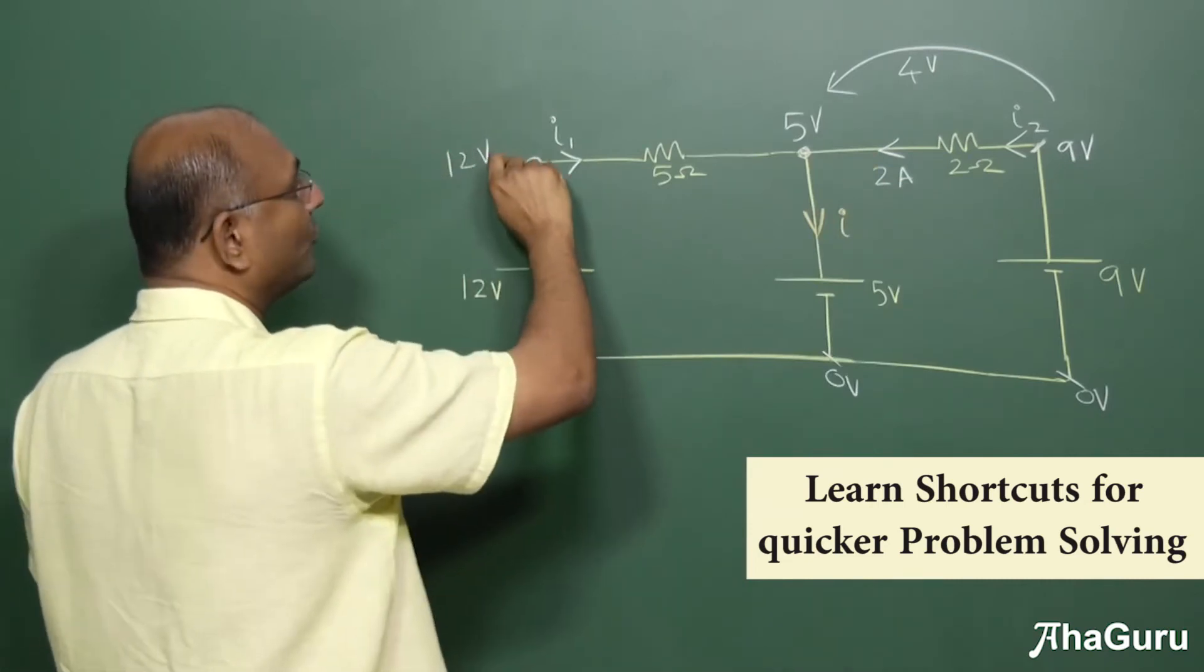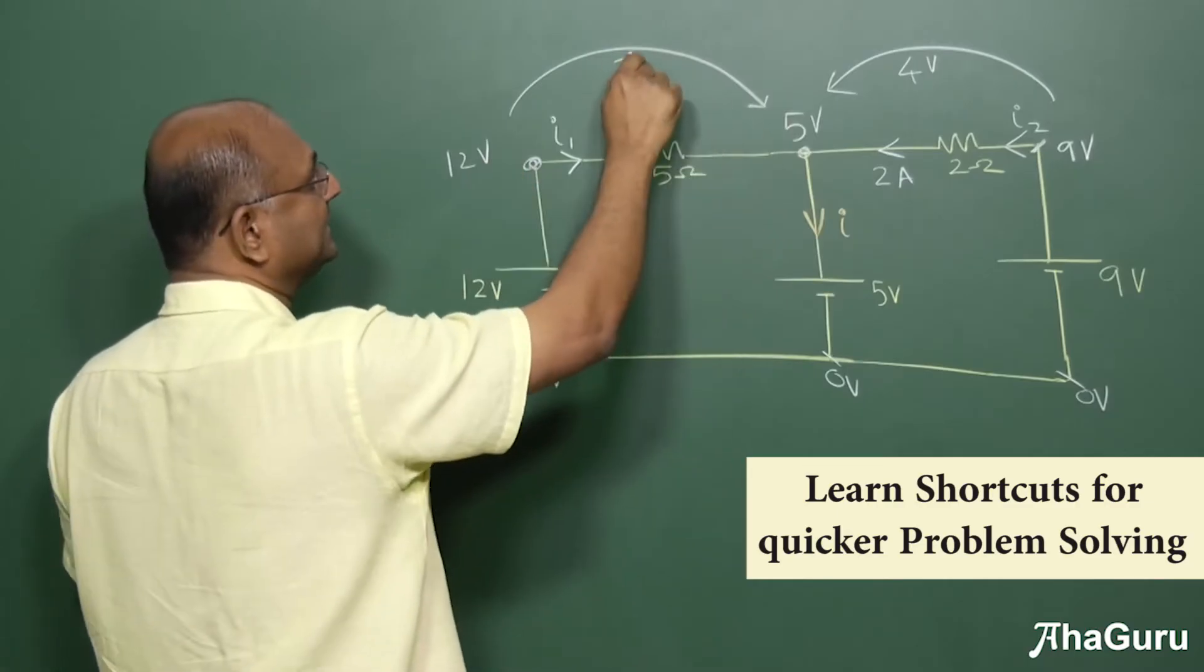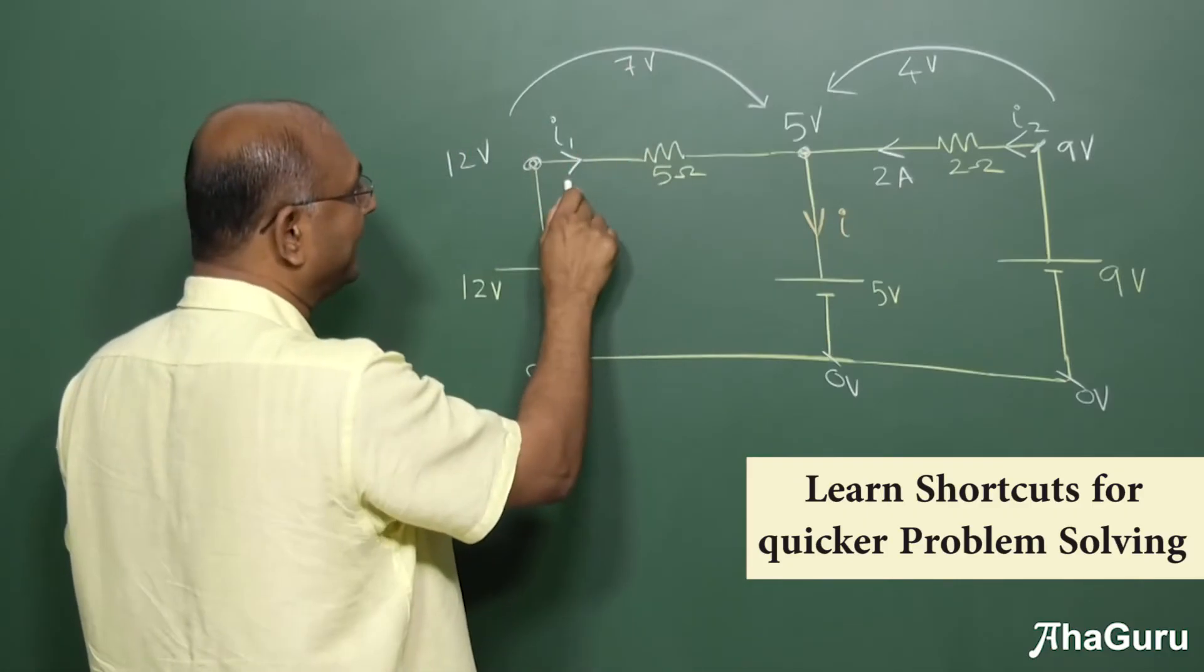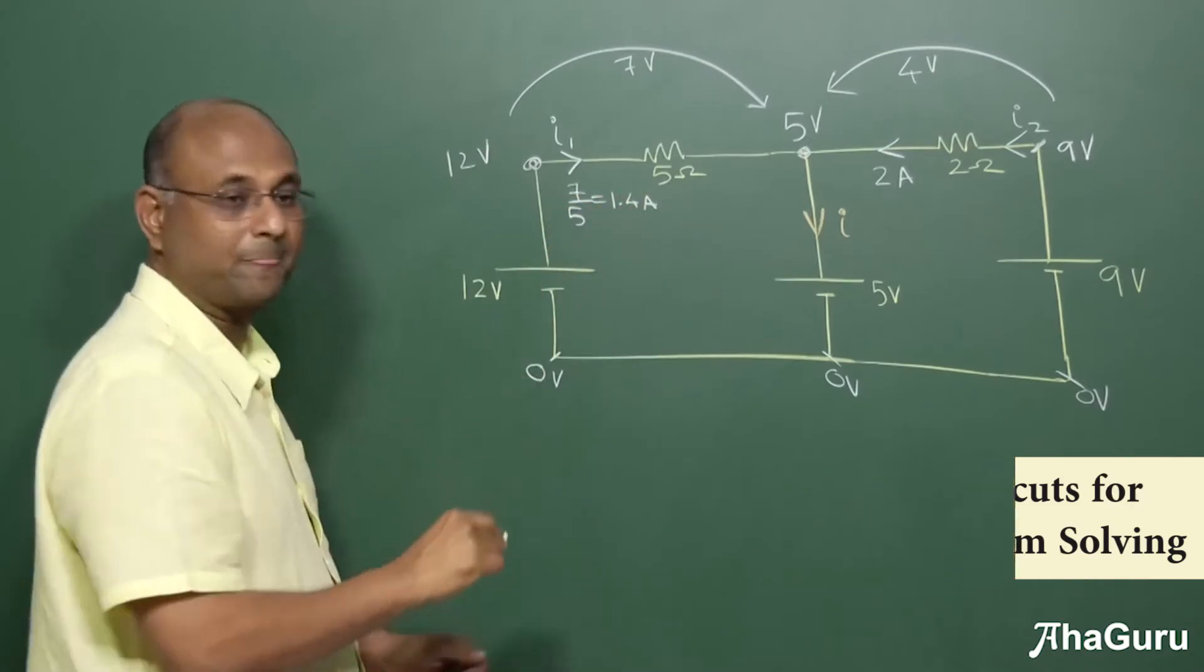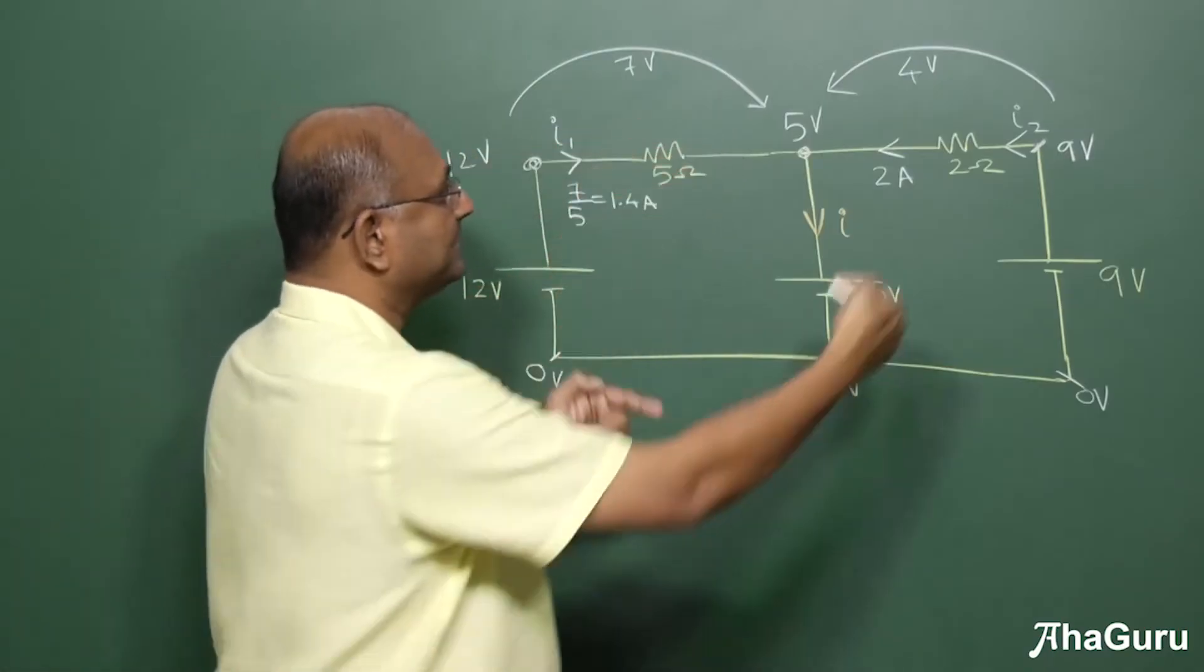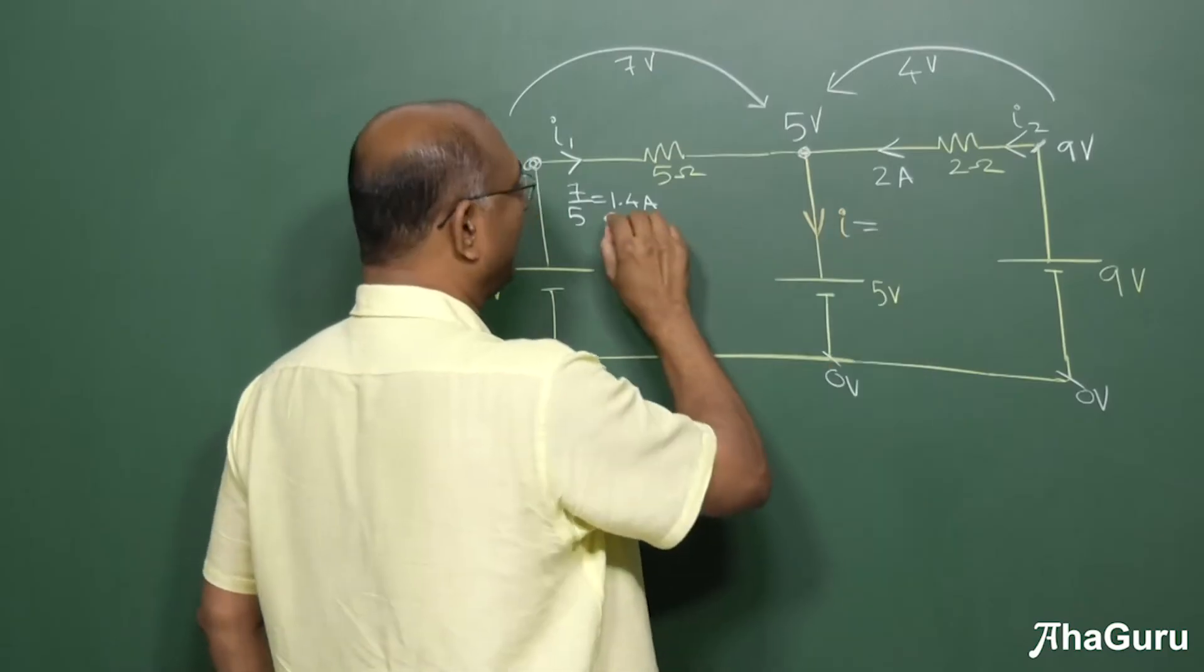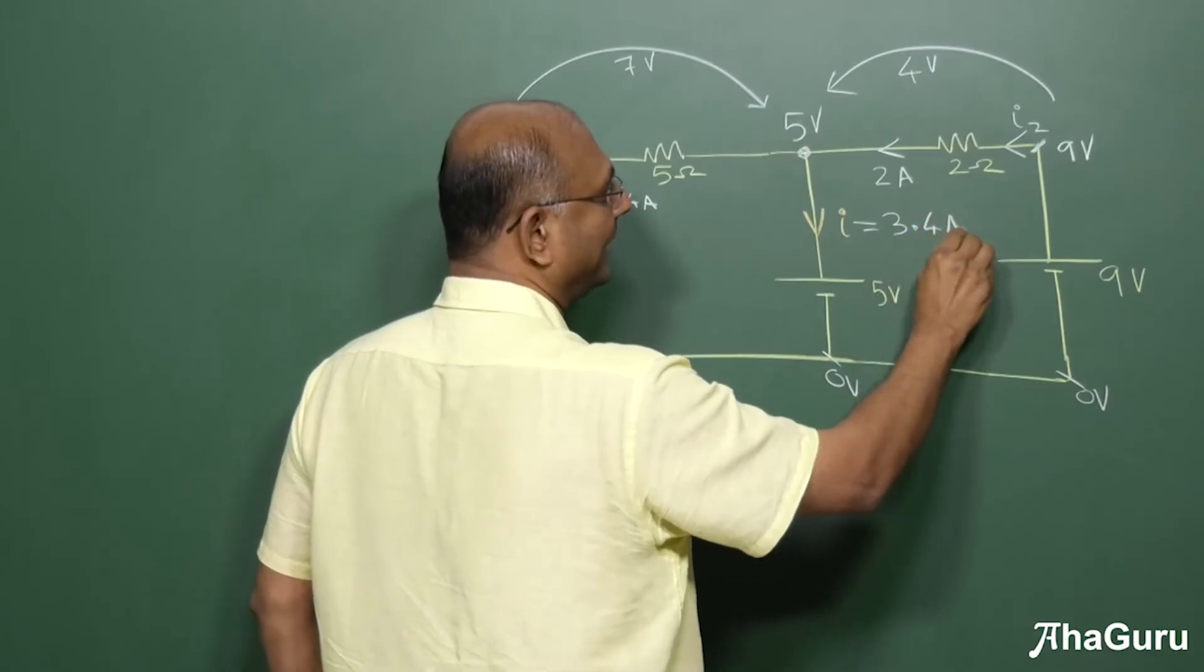So is that clear? Similarly, 12 volts, 5 volts, the potential drop is 12 minus 5, 7 volts. And so 7 volts by 5, 7 by 5, which is 1.4 amperes. So 1.4 amperes comes this way, 2 amperes comes that way. So I must be 1.4 plus 2, which is 3.4 amperes.